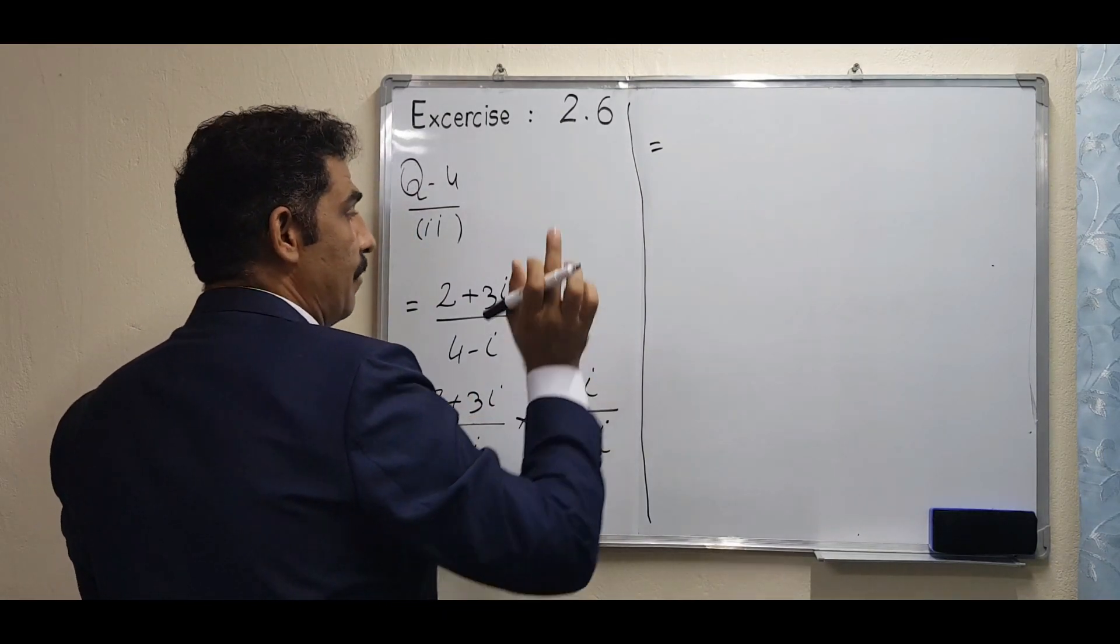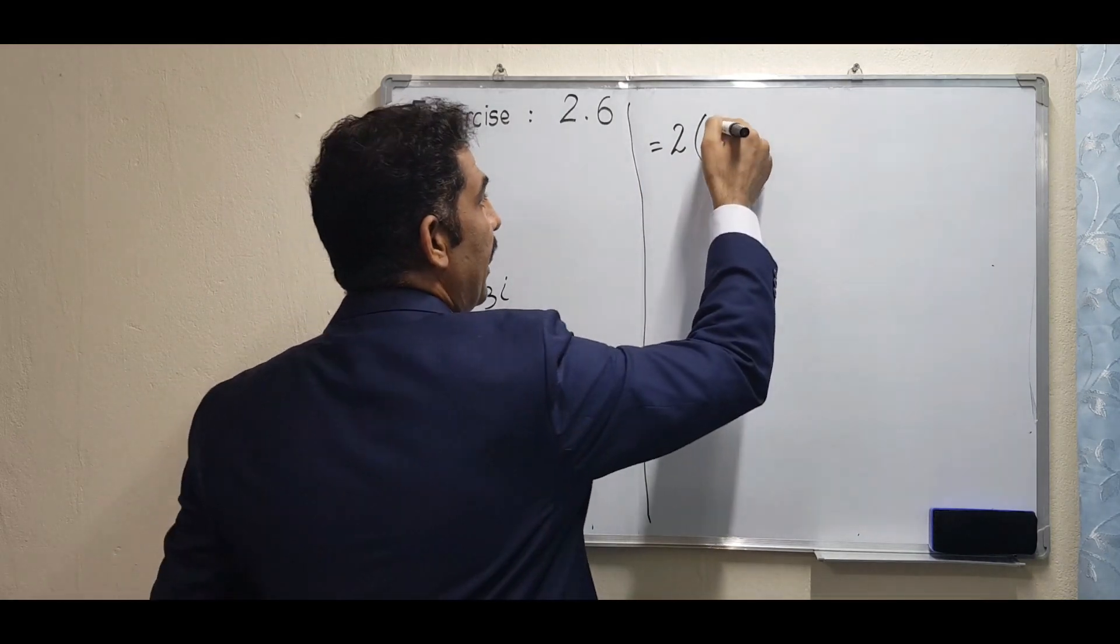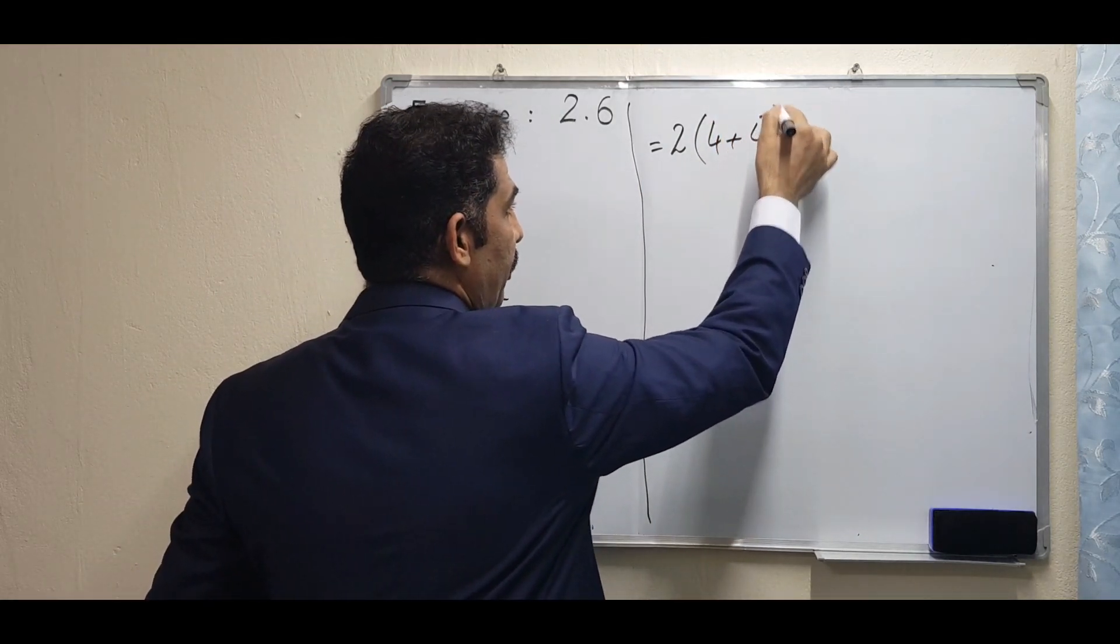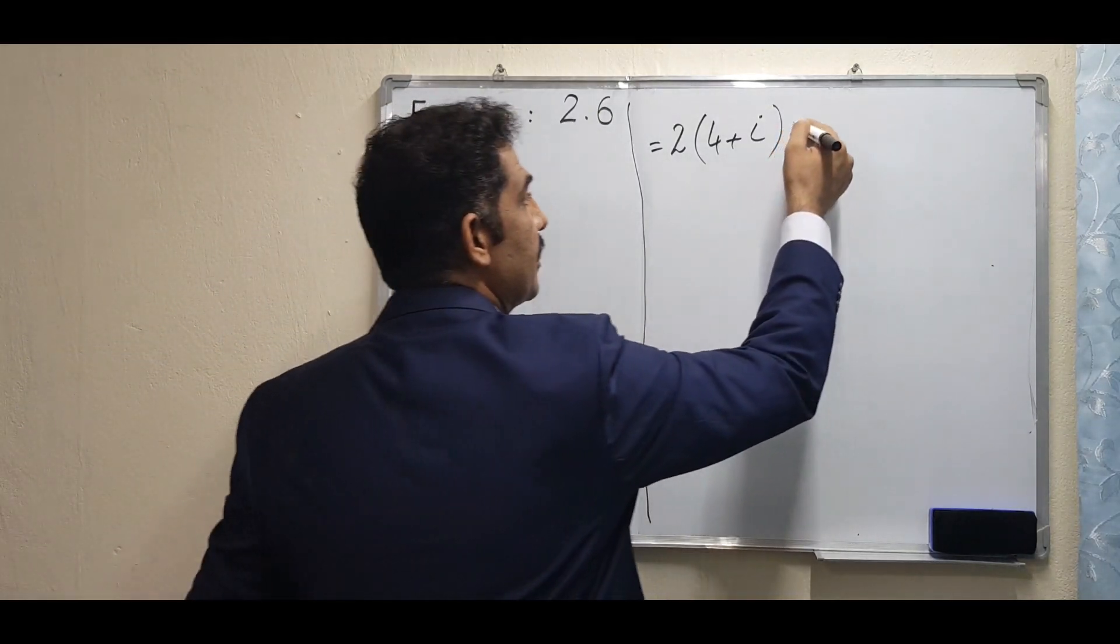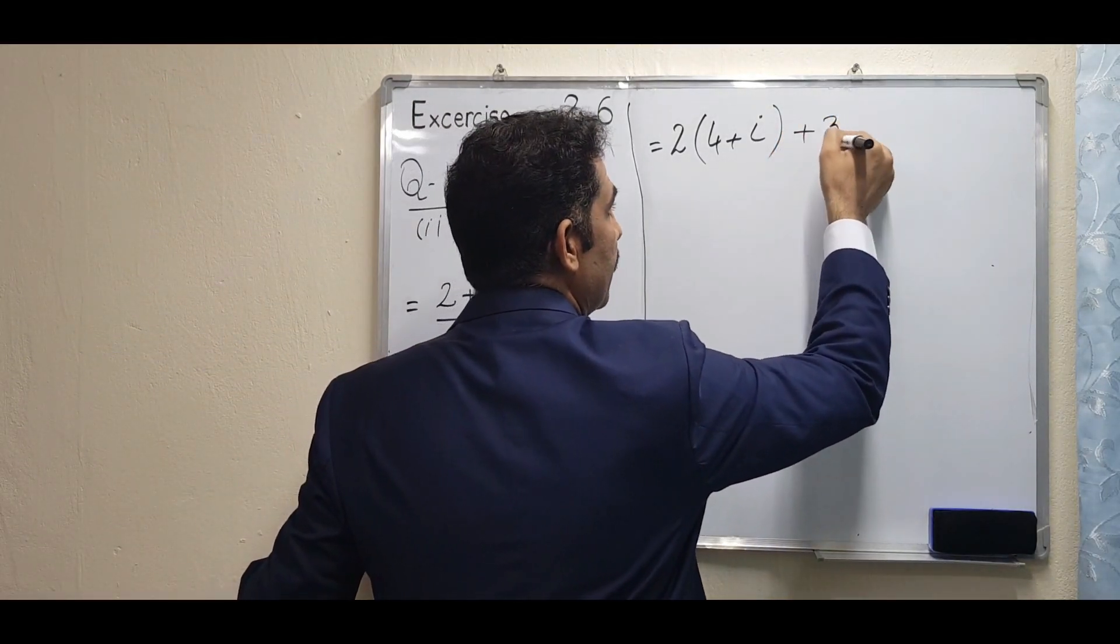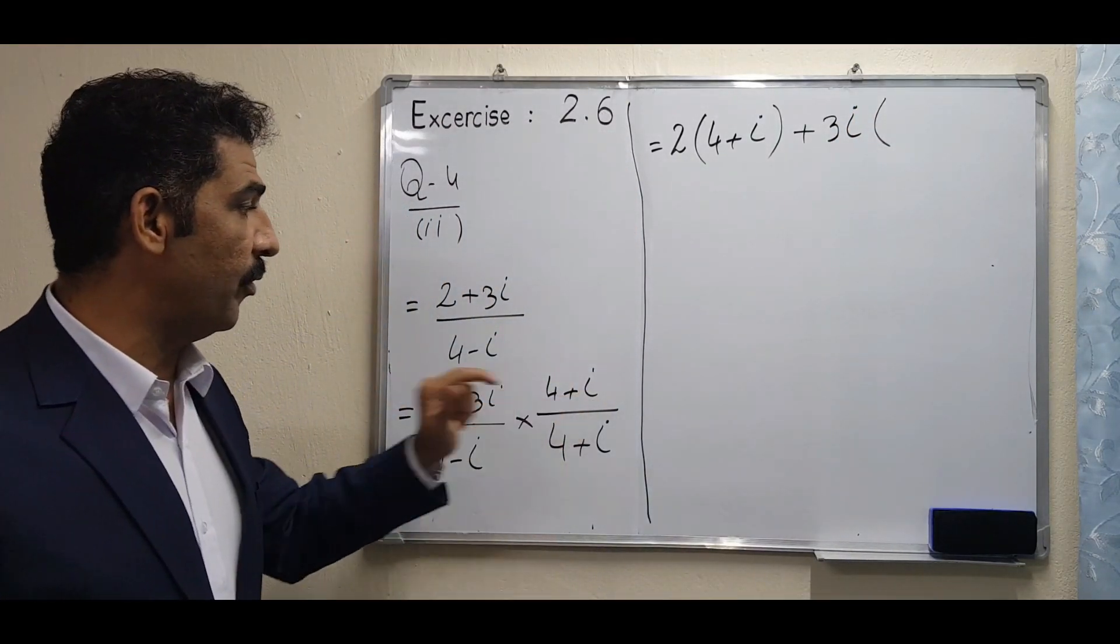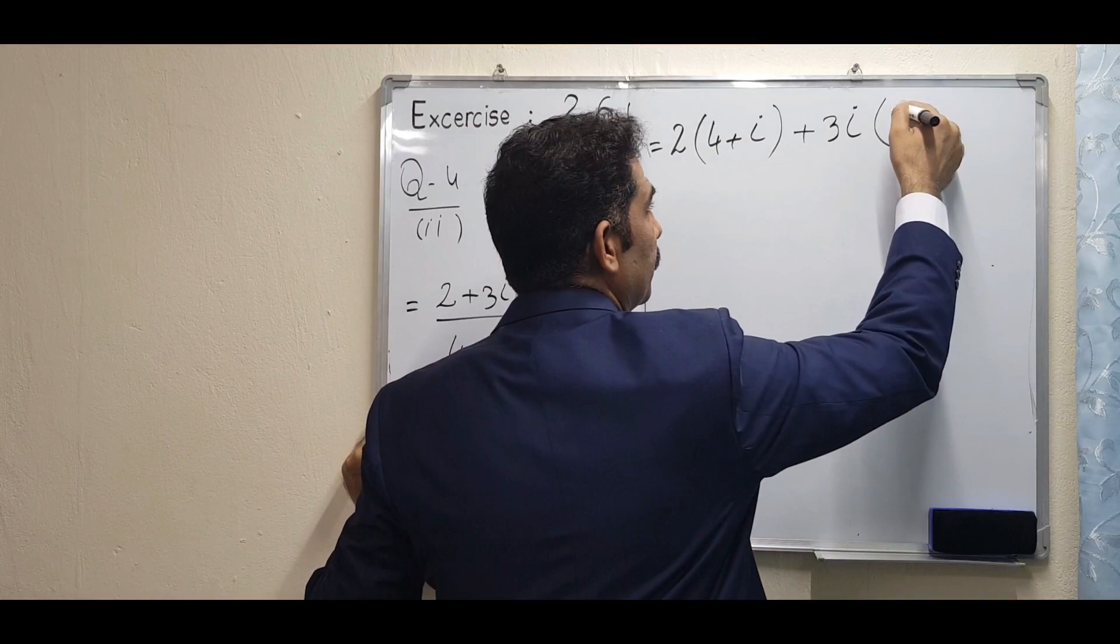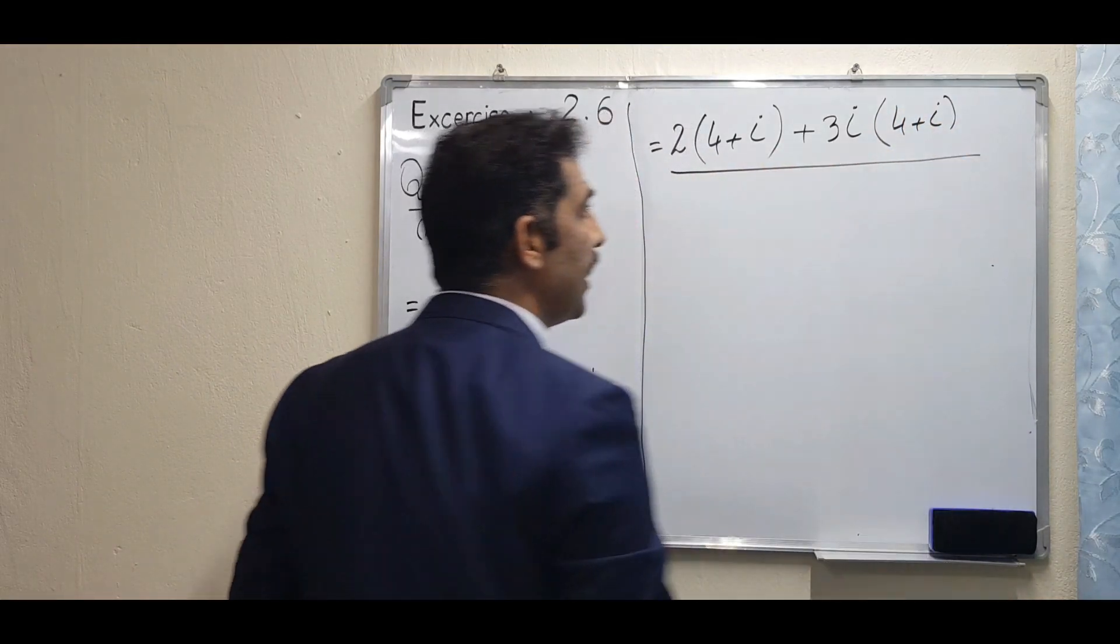That's why we use the bracket: 2 multiply by (4 + iota), after that plus 3 iota multiply by (4 + iota).